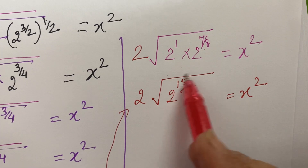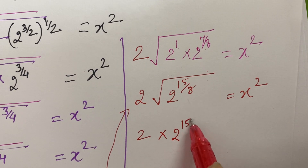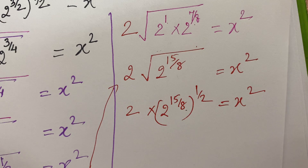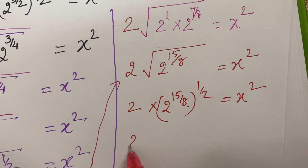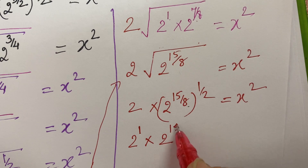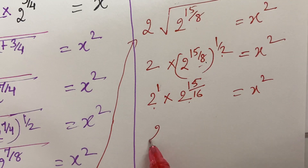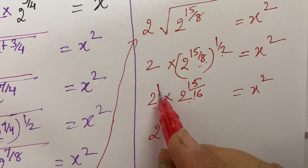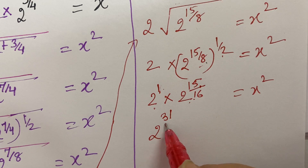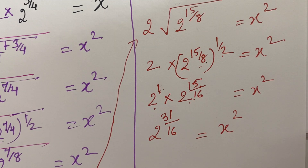Now we remove this root sign. So it will be 2 into 2 raised to the power 15 upon 8 raised to the power 1 upon 2, equal to x square. So here it is 2 raised to the power 1 into 2 raised to the power 15 upon 16. Since the bases are the same, powers are added — 16 plus 15 is 31 upon 16 — equal to x square.